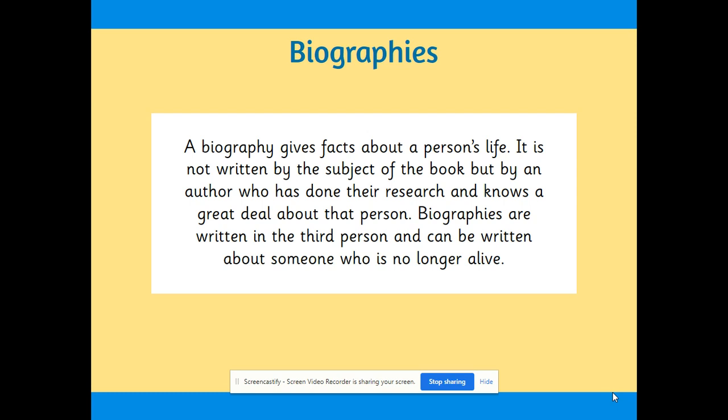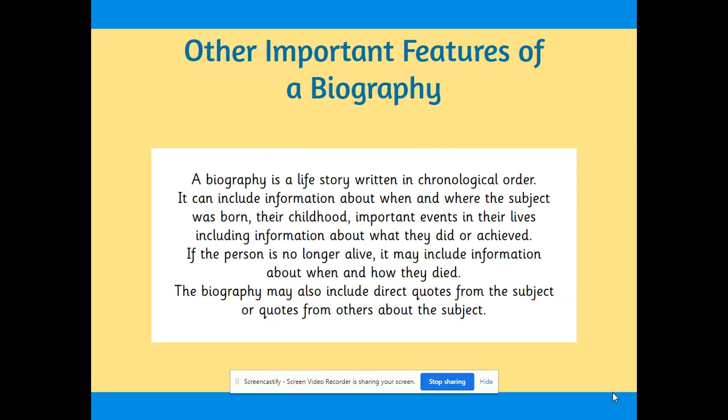A biography is not written by the subject of the book — it's not written personally, so when we wrote about Vincent van Gogh, we did not pretend we were him. It is written by an author who has done their research and knows a great deal about that person. Biographies are written in the third person and can be written about someone who is no longer alive. A biography is a life story written in chronological order. It can include information about when and where the subject was born, their childhood, important events in their lives, and what they did or achieved. If the person is no longer alive, it may include information about when and how they died. The biography may also include direct quotes from the subject or quotes from others about the subject.